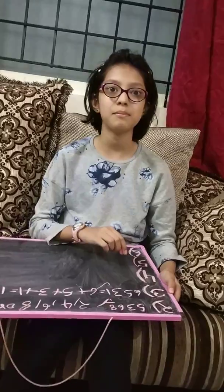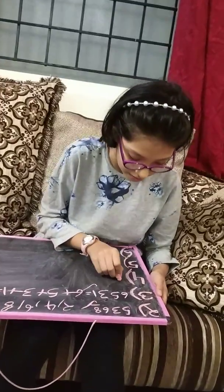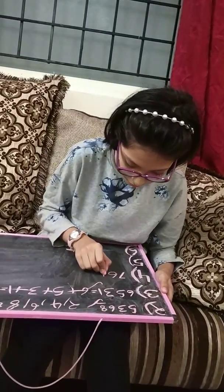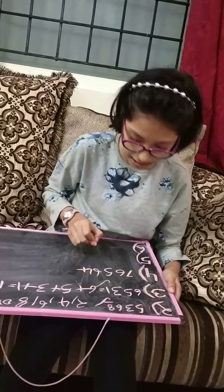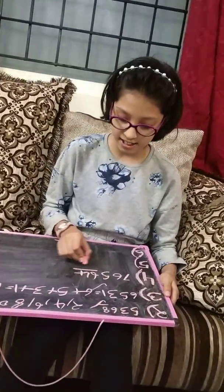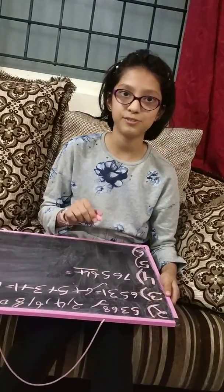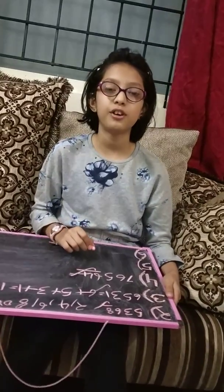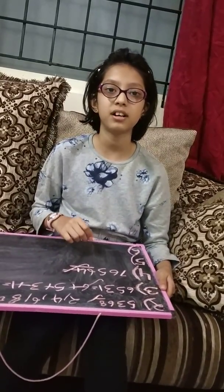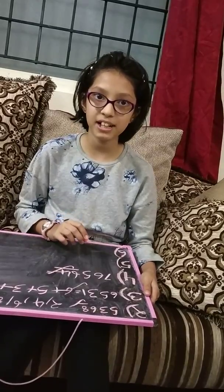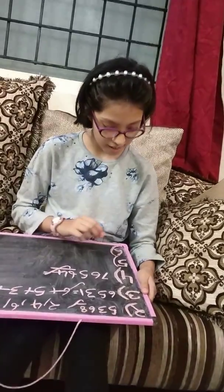Now divisibility by 4. We will take a number, for example 7, 6, 5, 6, 4. In this we need to see the last 2 digits. 64 is in the 4's table, so it will be divisible by 4. For example, if a number ends with 50, it will not be divisible by 4 as the number 50 is not in the 4's table.